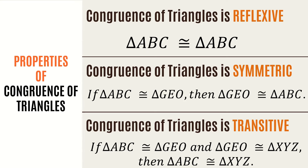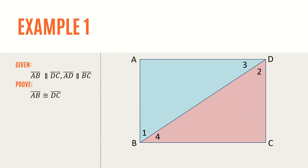Take note that there is no SSA congruence and there is also no AAA congruence. For our first example: given that side AB is parallel to side DC and side AD is parallel to side BC, prove that side AB is congruent to side DC.